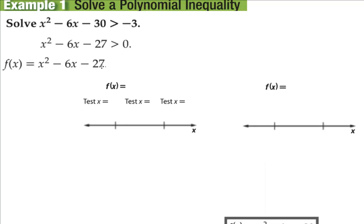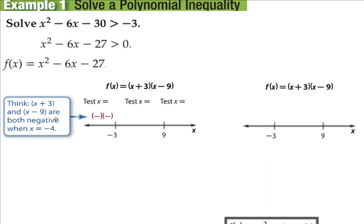We've already gone through how to find the zeros of polynomial equations and have lots of strategies for doing that, so we're not going to cover that again in this video. We can go ahead and factor this one, and we end up with (x + 3)(x − 9). Those are the values that go on our number line. We set each factor equal to zero, giving us negative 3 and positive 9 on our number line.